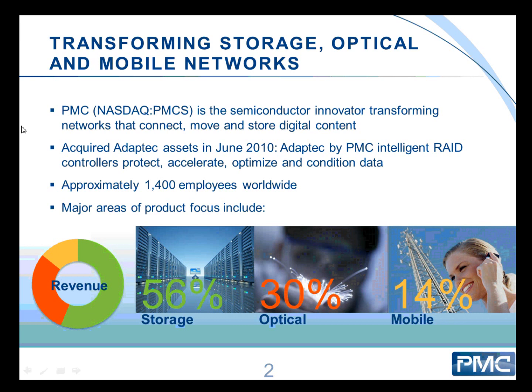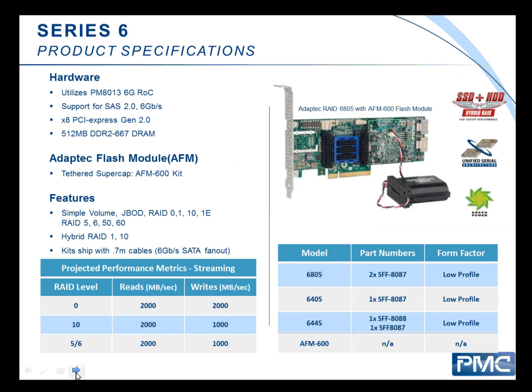With 14,000 employees worldwide, PMC Sierra is about a $600 million company per year, and more than half of that is storage. This has been very interesting for Adaptec as a division of PMC, because in the past we were using Intel IOPs for our 3GB SAS products. Now we have our own 6GB SAS ROC — RAID on chip — in-house from PMC. That's what our Series 6 controllers are based on.